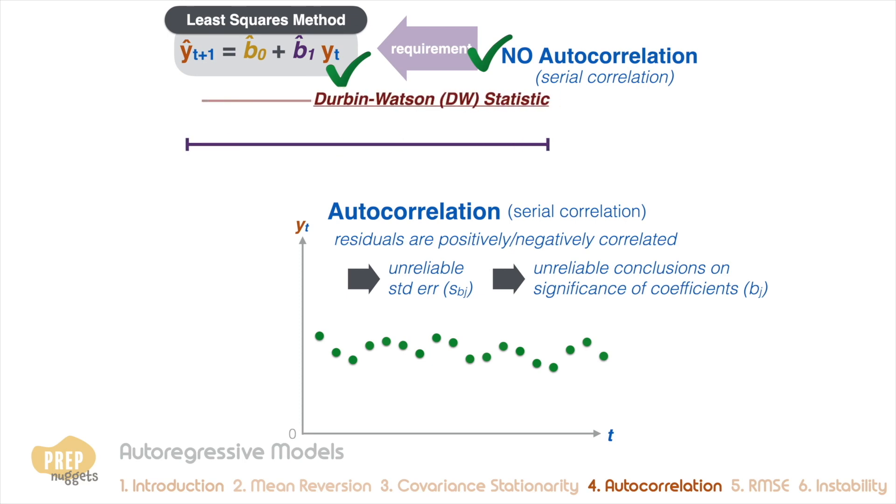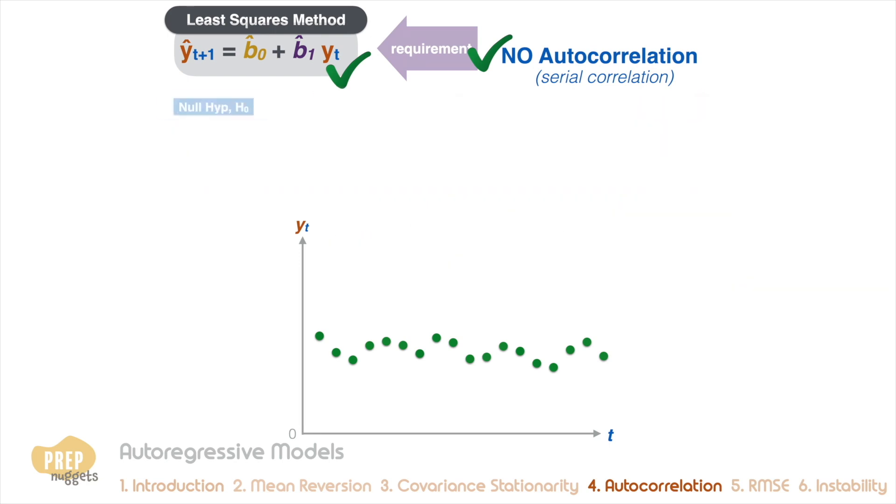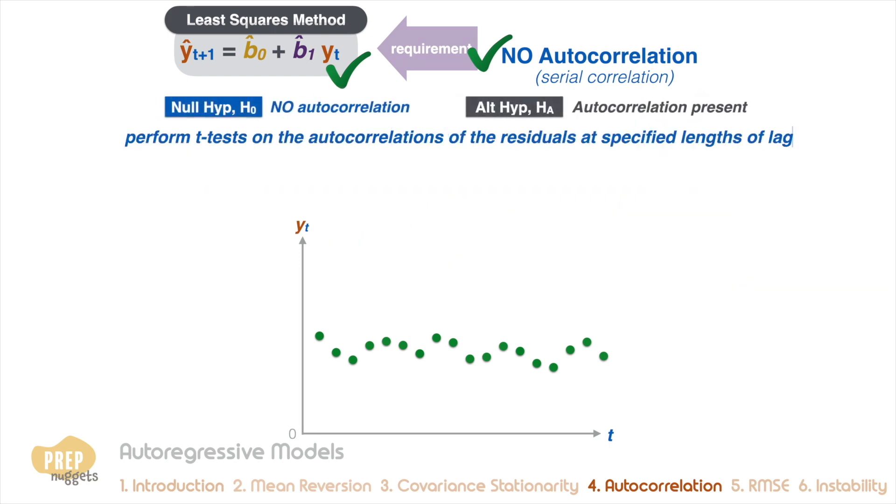We've also learned the Durbin-Watson statistic to test for the presence of serial correlation. Unfortunately, the DW test is not appropriate for AR models. Rather, we can perform t-tests on the autocorrelations of the residuals at specified lengths of lag.